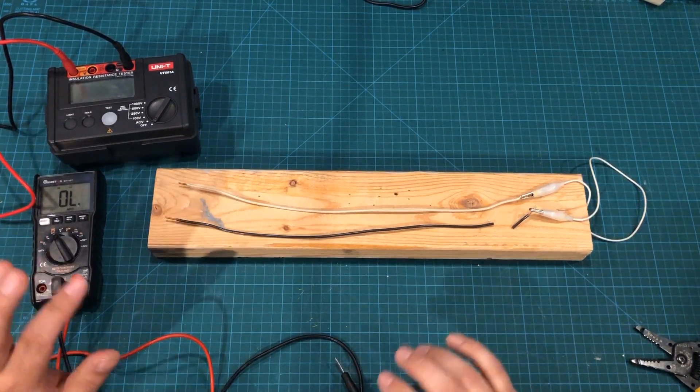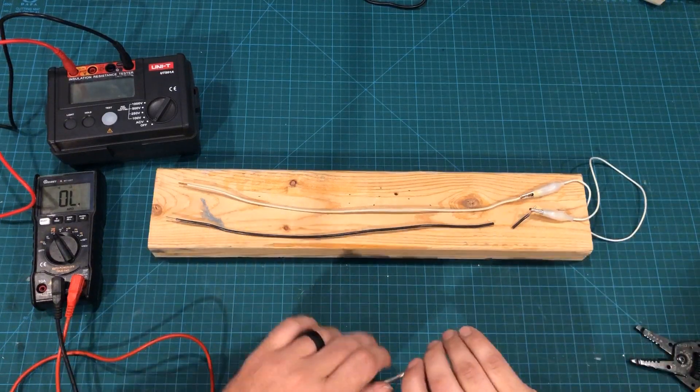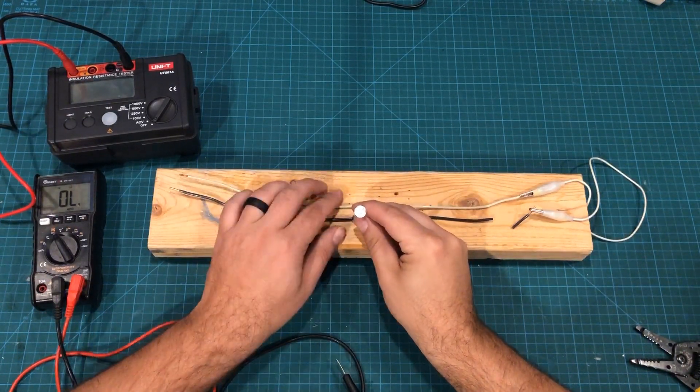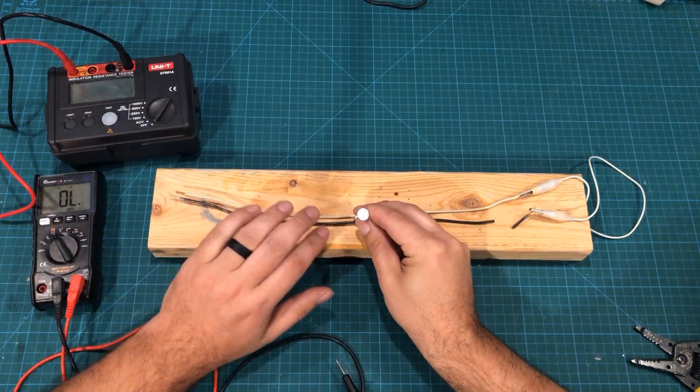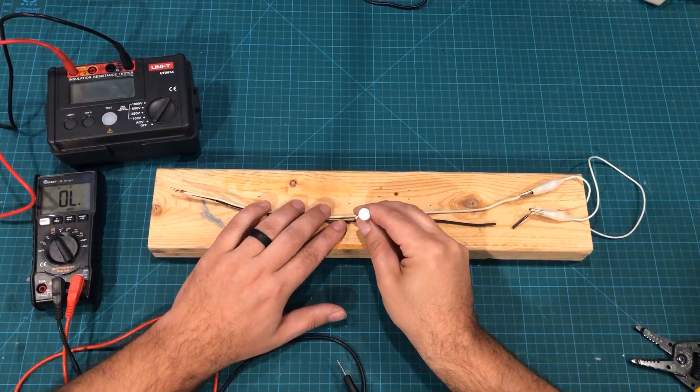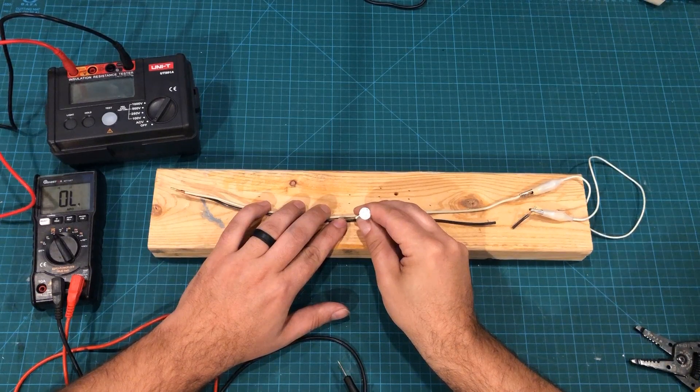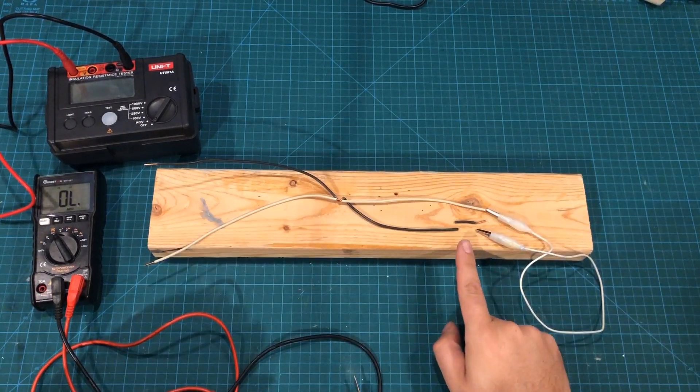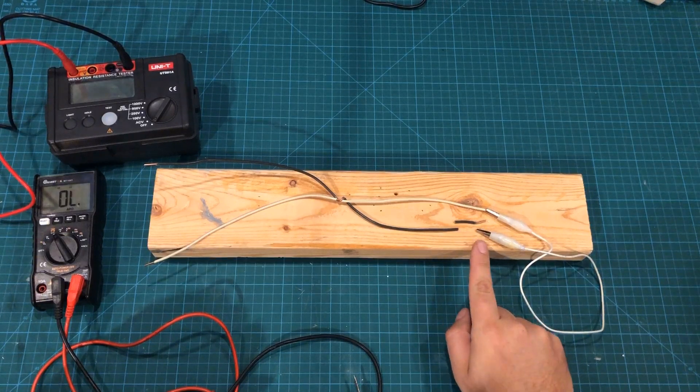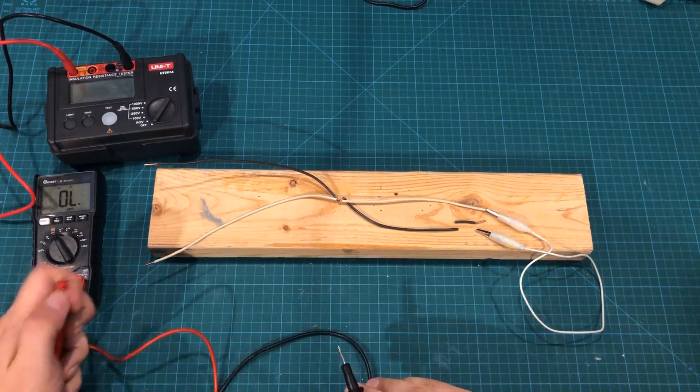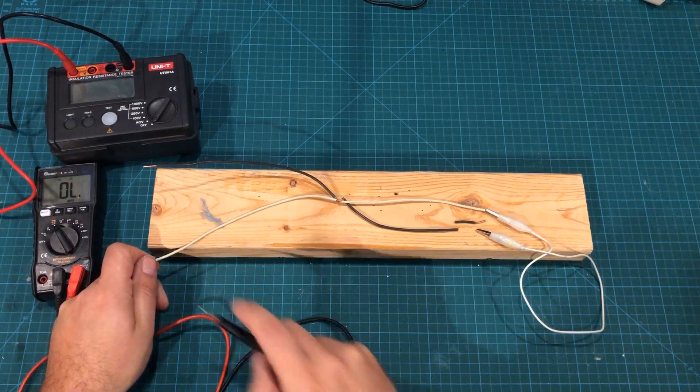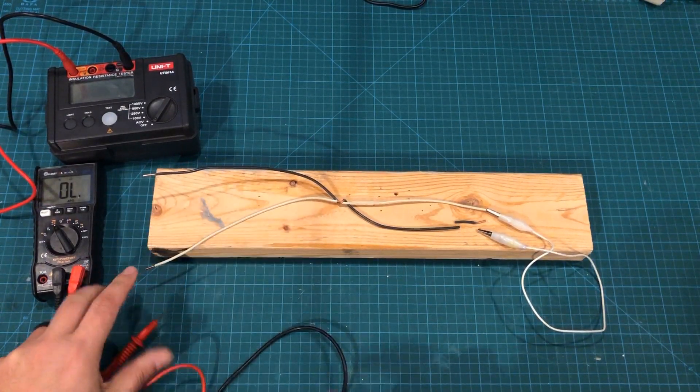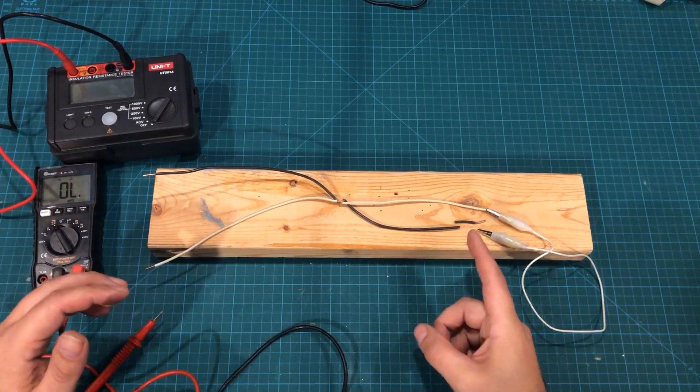But what if somewhere in the construction process, somebody had driven a nail or a screw or something through the Romex? I've obviously removed the Romex to make it easier to see. But let's say somebody had driven this nail in and connected these wires together. As you can see, I have my cut wire, and this alligator clip isn't connected to anything. But I come over here to do my continuity test, and we still have continuity.